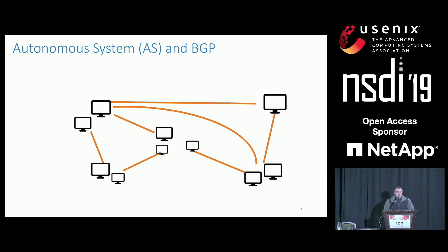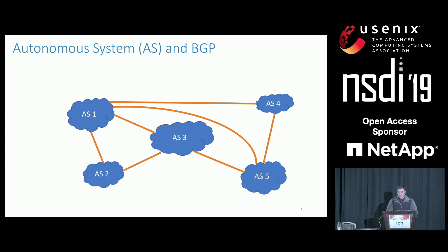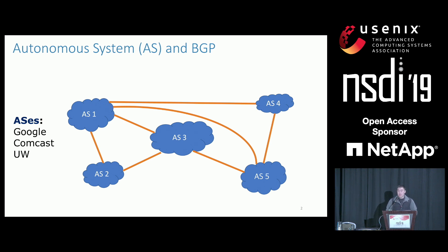As many of you probably know, the internet is not a network of computers, but a network of networks. These networks are called Autonomous Systems, or AS in short. Each AS is owned and administered by a single entity, like Google, Comcast, and the University of Washington. It implements some set of policies in deciding how to route its packets to the rest of the internet via the Border Gateway Protocol, or BGP.